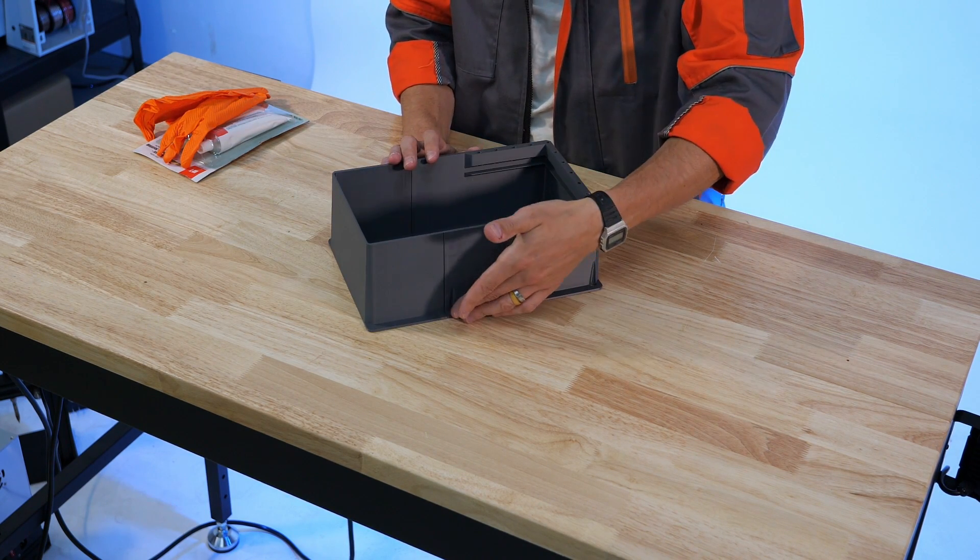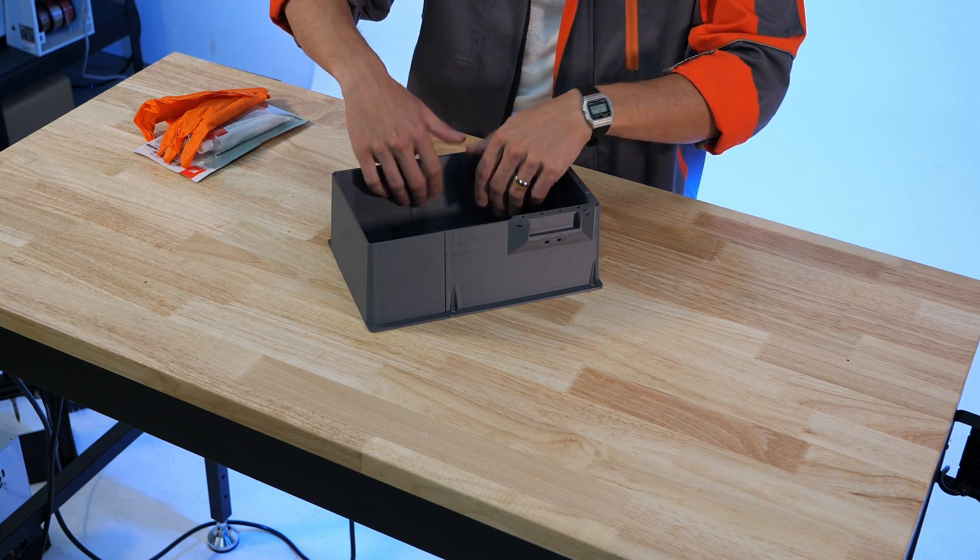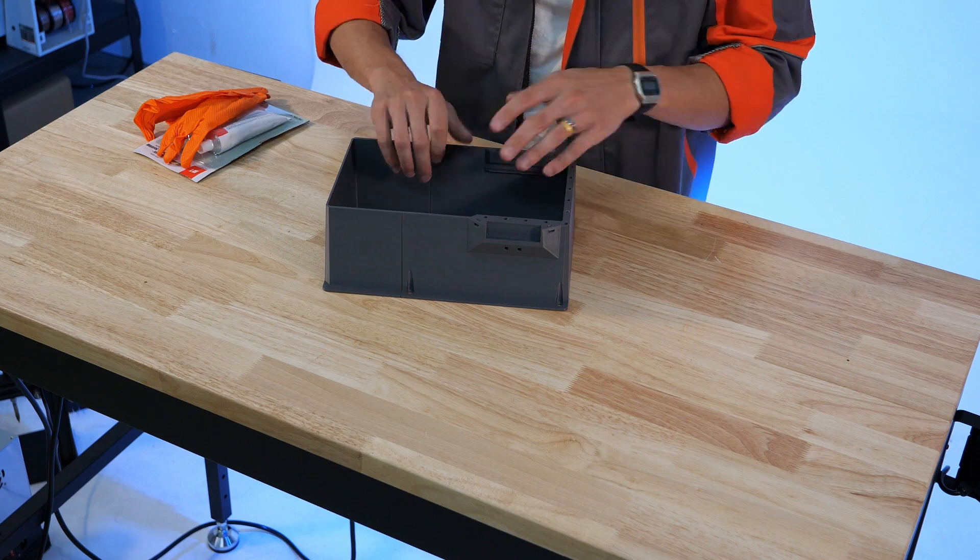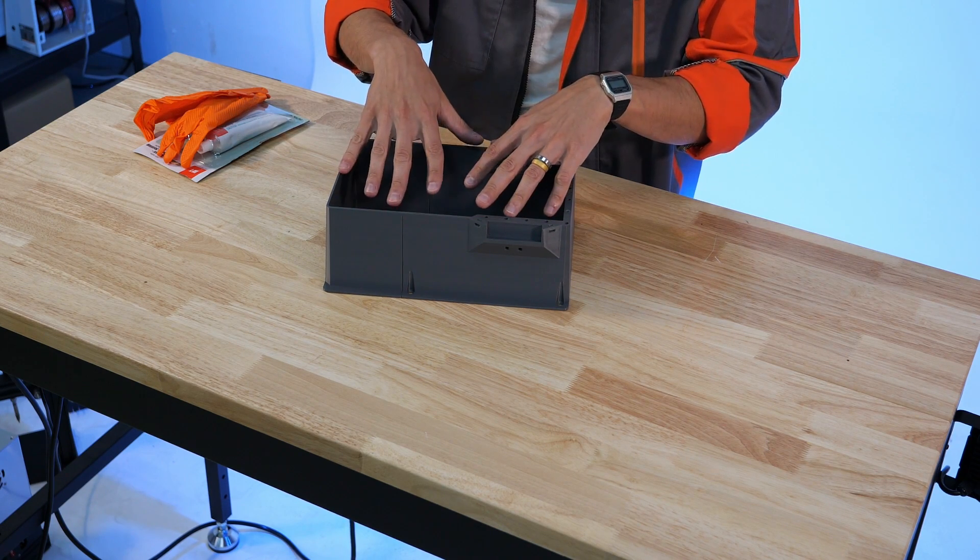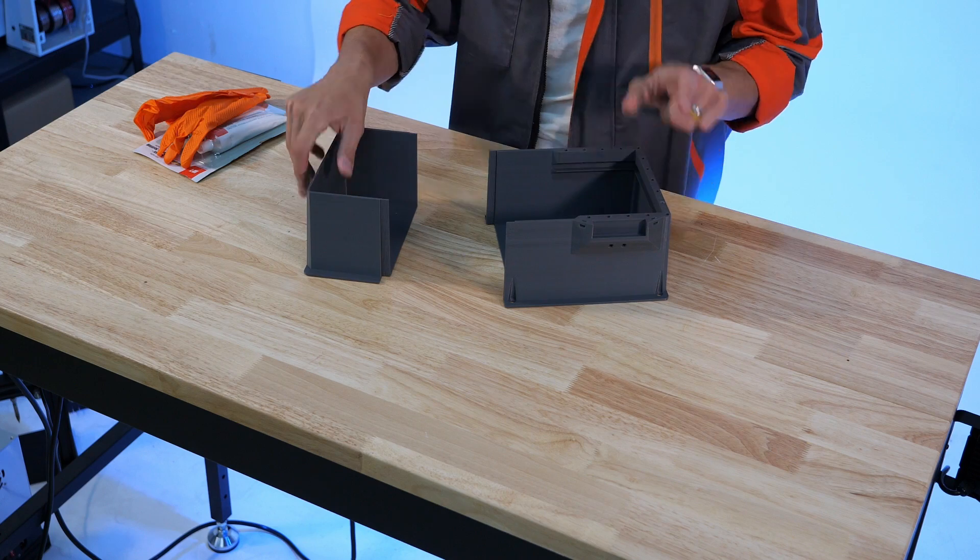So what we're going to do for this process is we're going to apply an epoxy inside of these slots and then we'll coat the inside of the container here with an epoxy as well. That's going to serve to watertight this whole enclosure so it can hold water during the EDM process.